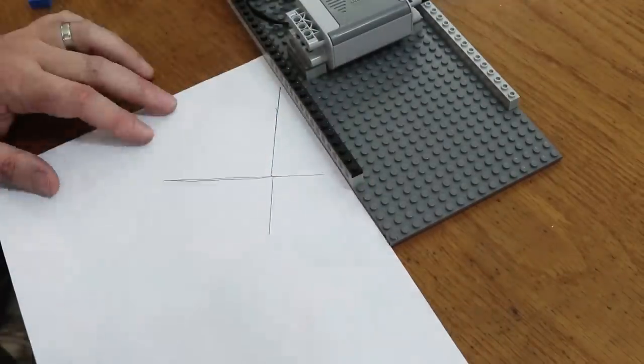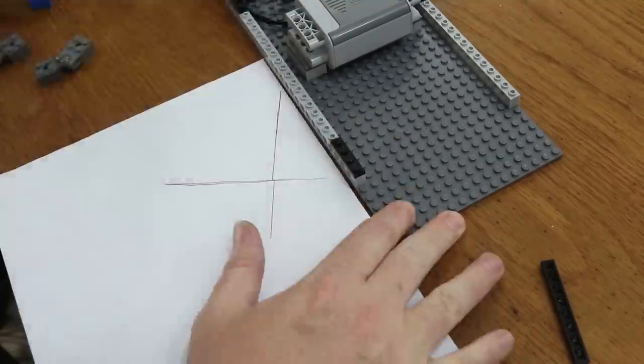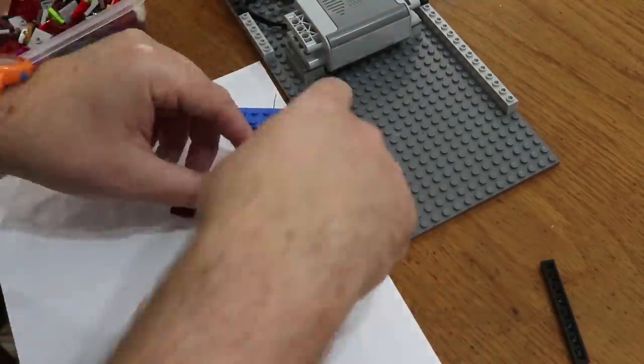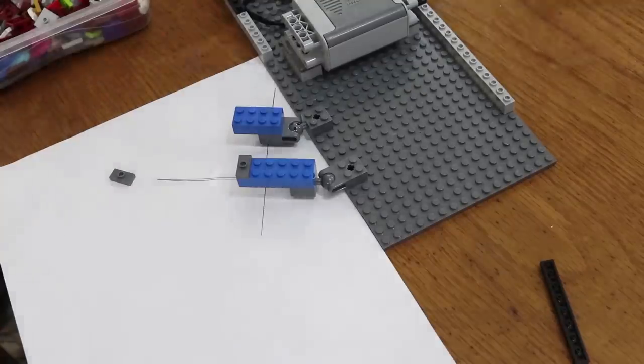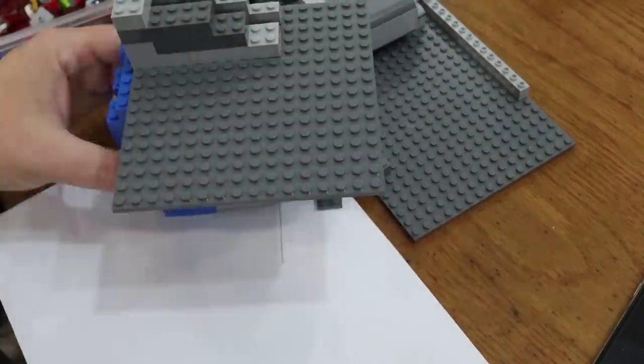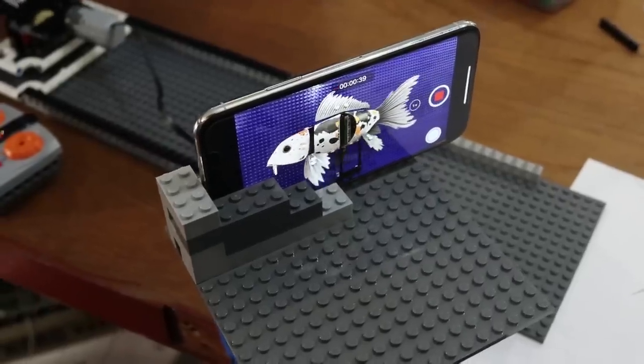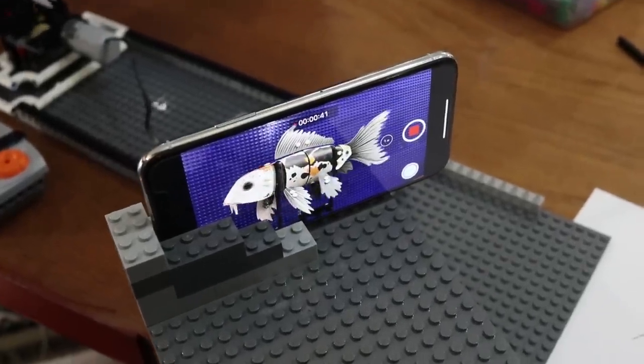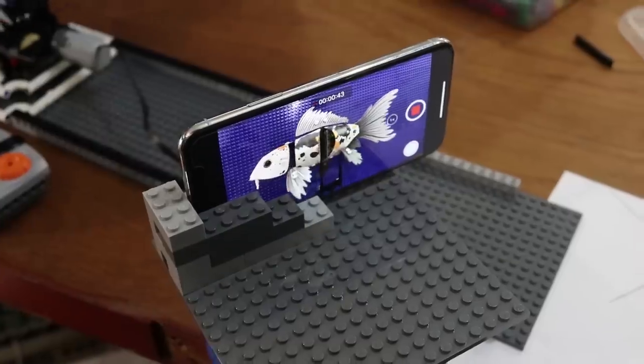I lock the platform into position at the angle I want by tracing the angle on a piece of paper and adding ball joints that will allow me to build a new structure at the proper orientation to the fish. Now I'm satisfied with the view of the fish that we get with my smartphone camera in place.